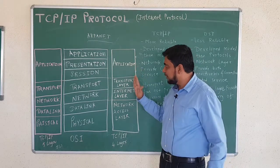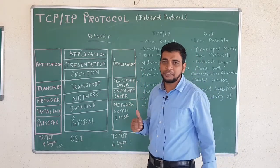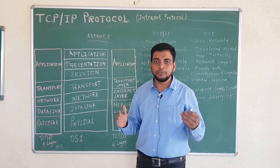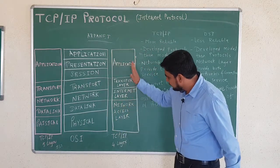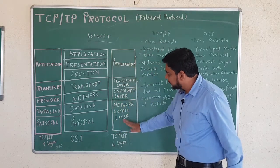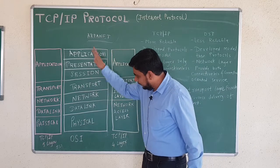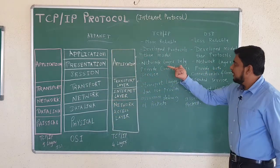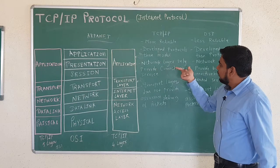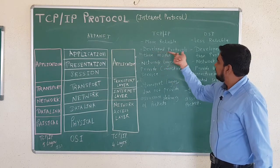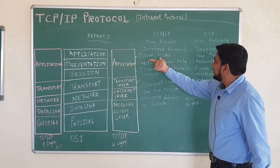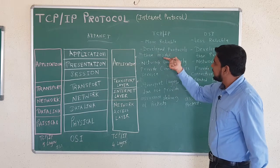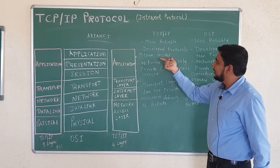In actual network transmission between two hosts, TCP/IP is the protocol used on the internet. One important difference is: in TCP/IP, the protocols were developed first and then the model was created. Whereas in OSI, the model was developed first and then the protocols were decided.